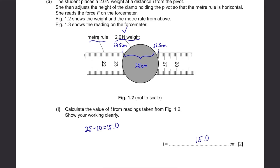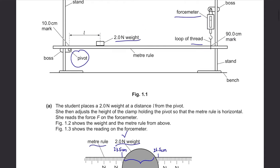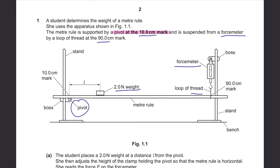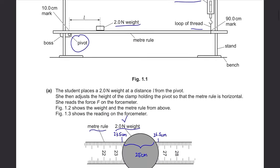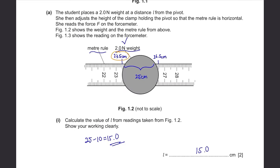Therefore we deduct 10cm from 25, so 25 minus 10 equals 15.0cm. The answer is 15.0cm. We put the decimal because the figures given in the question are to 1 decimal place or 3 significant figures, and the readings here can also be calculated to 1 decimal place, so we follow that trend.